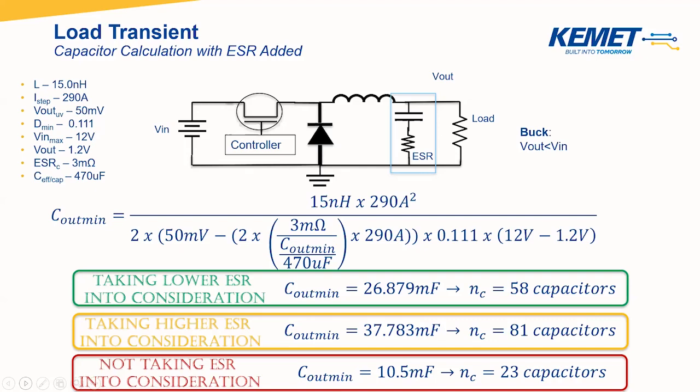The lower your ESR, the better your system performance and the fewer capacitors you need, though you might need to sacrifice board area or total capacitance to meet your needs. Rather than just looking at capacitance and rated ripple current — which can be found in a datasheet or using KSIM — you also need to account for ESR in your system. ESR is very important when looking at load transient and should be monitored when selecting parts.